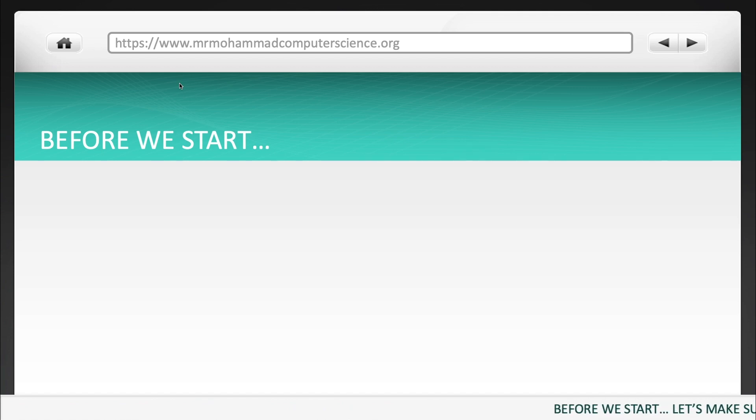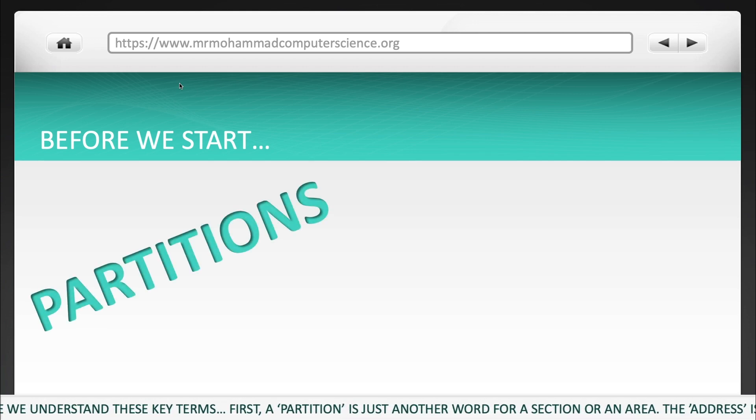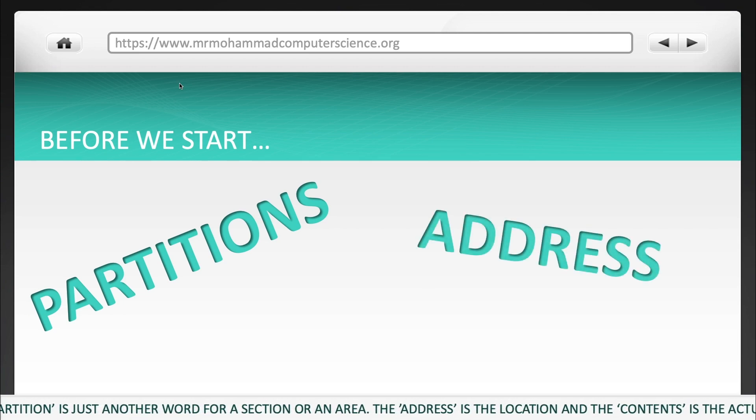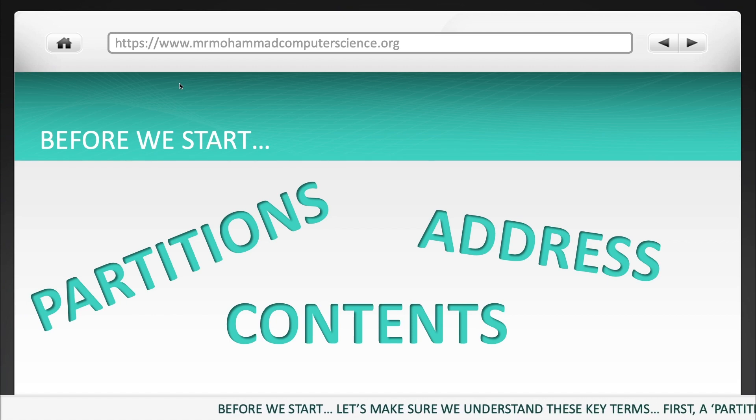Before we start, let's make sure we understand these key terms. First, a partition is just another word for a section or an area. The address is the location and the content is the actual data. So to put that together, the content is the data. We store this data in a partition and we can identify the partition by its unique address.